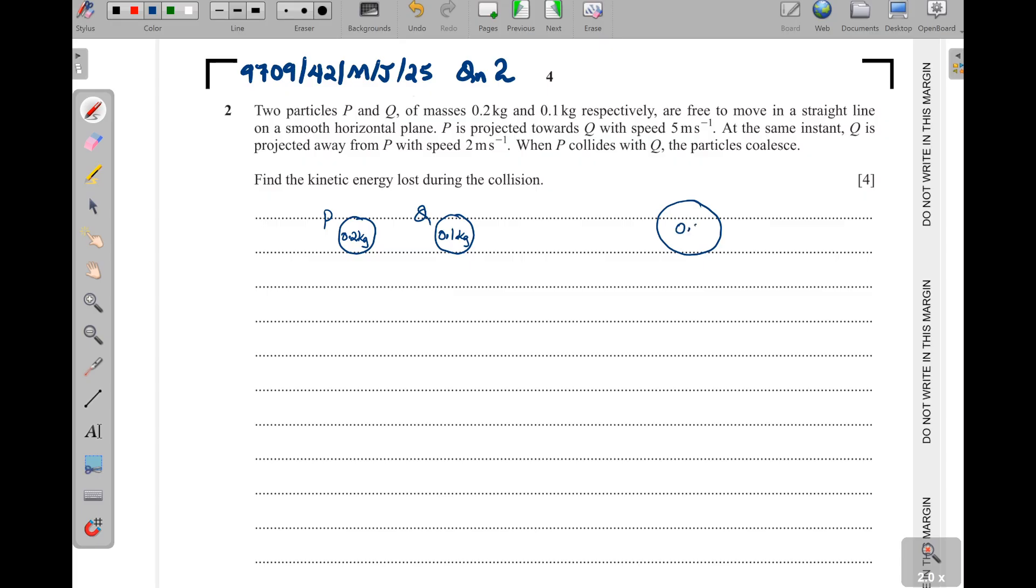The mass is going to be 0.3 because these two are going to add up. That is the coalesce particle. Now, we are going to have here the initial speed for P of projection is 5 meters per second. It is projected towards Q. And then Q is also projected away from P, that is 2 meters per second.